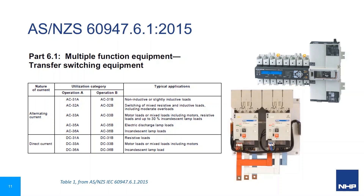Transfer switching equipment is defined in low voltage switchgear IEC 60947 part 6.1, with utilisation categories for changeover of different load types and function. Category A for frequent operation and Category B for infrequent or occasional switching is the same as part 3.